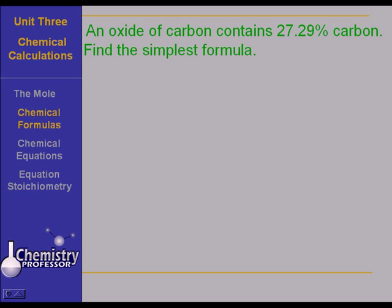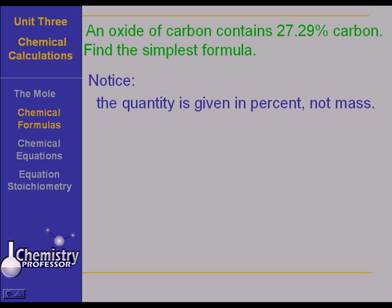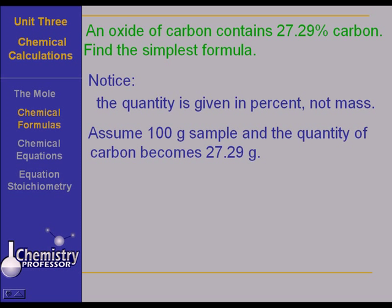Here's another problem. An oxide of carbon contains 27.29% carbon. Find the simplest formula. The easiest way to go about this is to remember that once the quantity is given in percent and not mass, it's easy to convert to mass. Just assume you have a 100-gram sample and the quantity of carbon then becomes 27.29 grams.